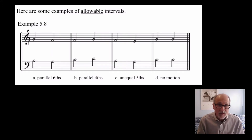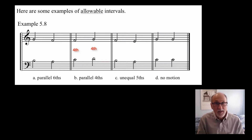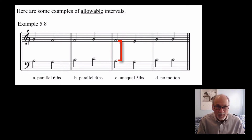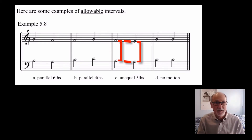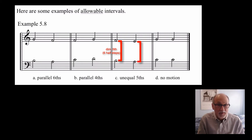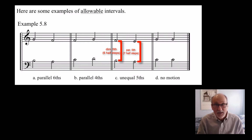Let's look at B: C and F going to D and G. That's a rather hollow sounding interval as well, but it's not forbidden — you can have parallel fourths. The C example is a little trickier. B to F — that looks like a fifth, doesn't it? B to F, and then A to E. You might say, oh, that's parallel fifths. But actually it's not, because the first interval, B to F, that's a diminished fifth — it's not a perfect fifth. B to F sharp would be a perfect fifth. So fifths moving in the same direction are okay as long as they're not both perfect. In this case, the diminished fifth to the perfect fifth is called unequal fifths, and that's okay.